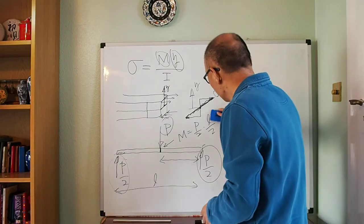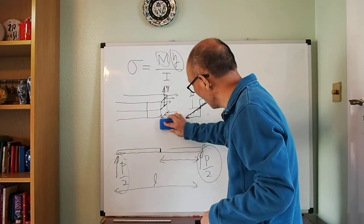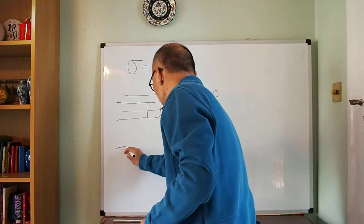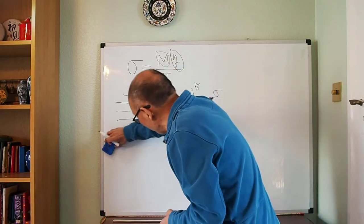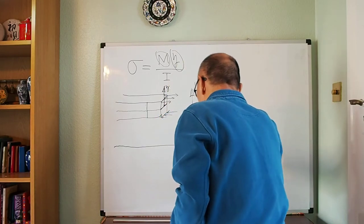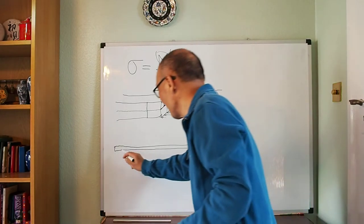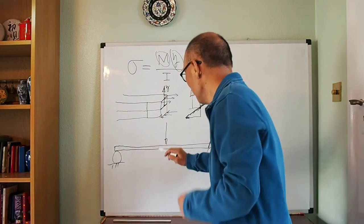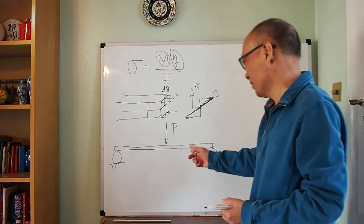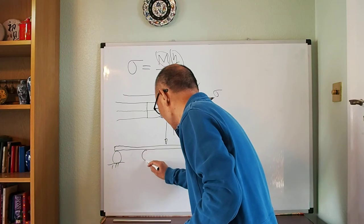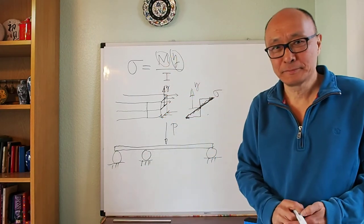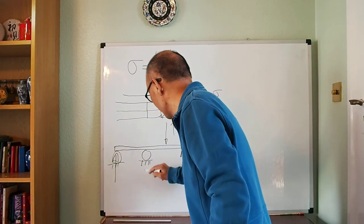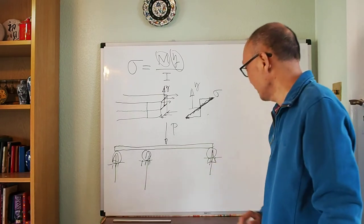Let me make a small change to the support arrangement. Say I have one support here, another support there, and I apply a load. I feel that's a bit weak, so let me add another support in between. Now, how do I calculate the bending moment? There are three reaction forces — one at each support — which I'll call Ra, Rb, and Rc.